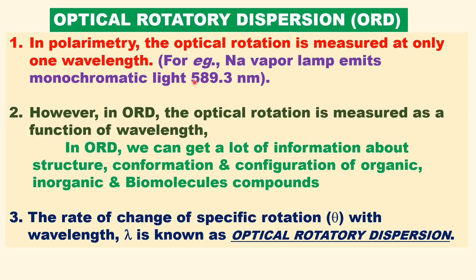Now let us see what is ORD. In polarimetry, we measured the optical rotation for only one wavelength — for example, the sodium vapor lamp as a monochromatic source. However, in ORD, the optical rotation is measured by varying the wavelength of the radiation. So in ORD we can get a lot of information, like structural confirmations and configurations of organic and inorganic compounds. In other words, the rate of change of optical rotation with respect to wavelength is known as Optical Rotatory Dispersion.